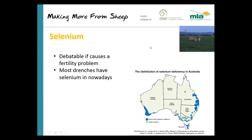It's hard not to mention selenium because wherever you look at reproduction problems in sheep or cattle, selenium always comes up. To my knowledge, there's no good evidence that selenium is associated with a fertility problem in sheep. There have been investigations in Victoria suggesting it doesn't cause a specific problem in cattle, and there are probably about 50 papers saying it is a problem and 50 saying it isn't.